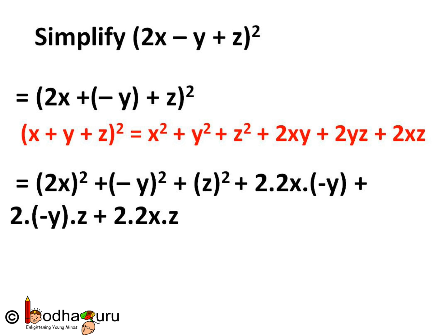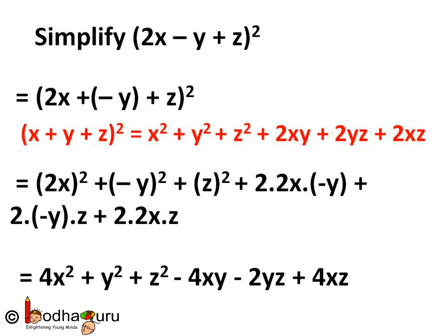Using Identity 5, we write 2x whole square plus minus y whole square plus z square plus 2 times 2x into minus y plus 2 times minus y into z plus 2 times 2x into z. This gives 4x square plus y square plus z square minus 4xy minus 2yz plus 4xz. So using Identity 5, we can simplify big polynomials of three variables and factorize them too.